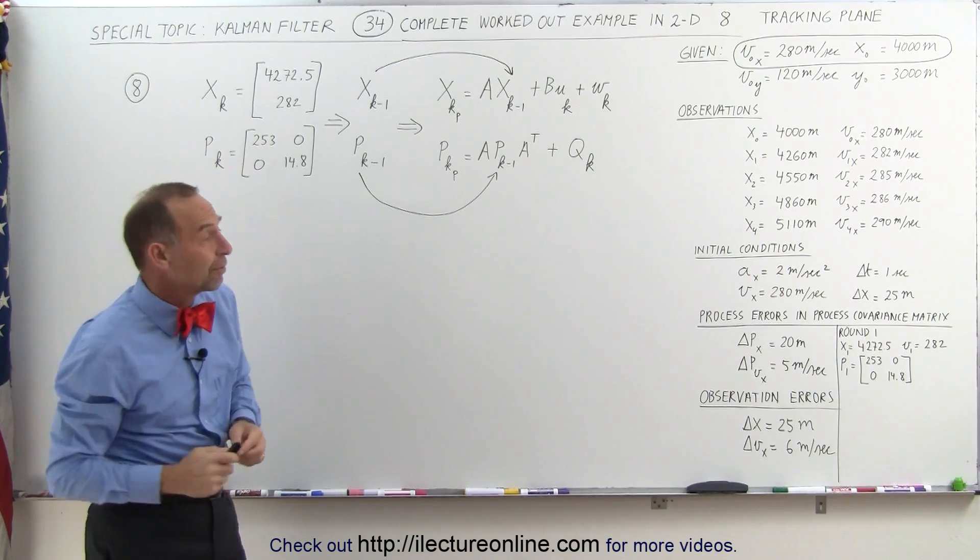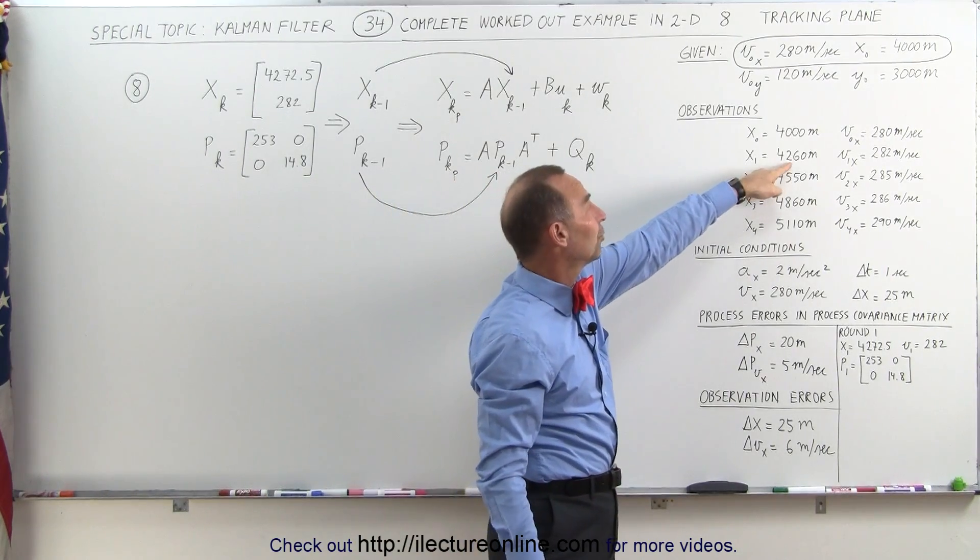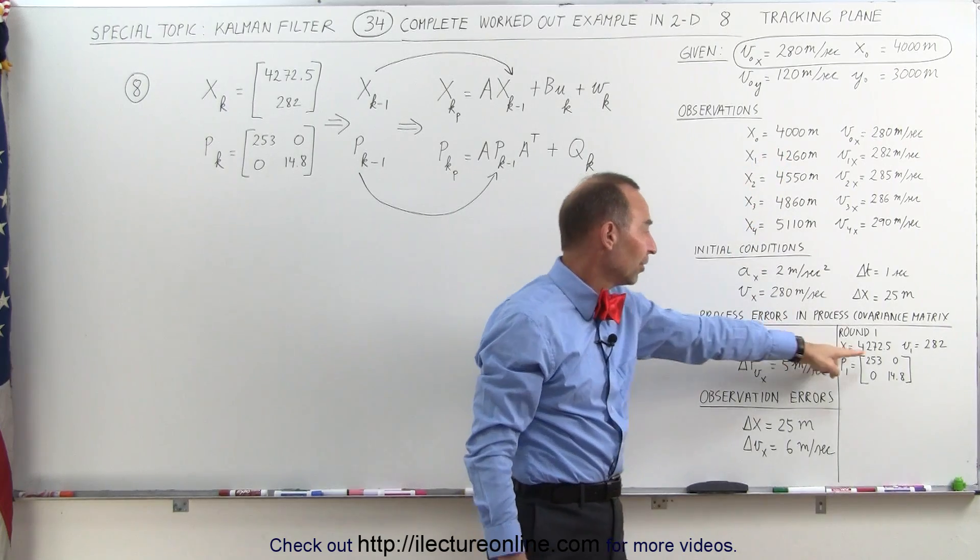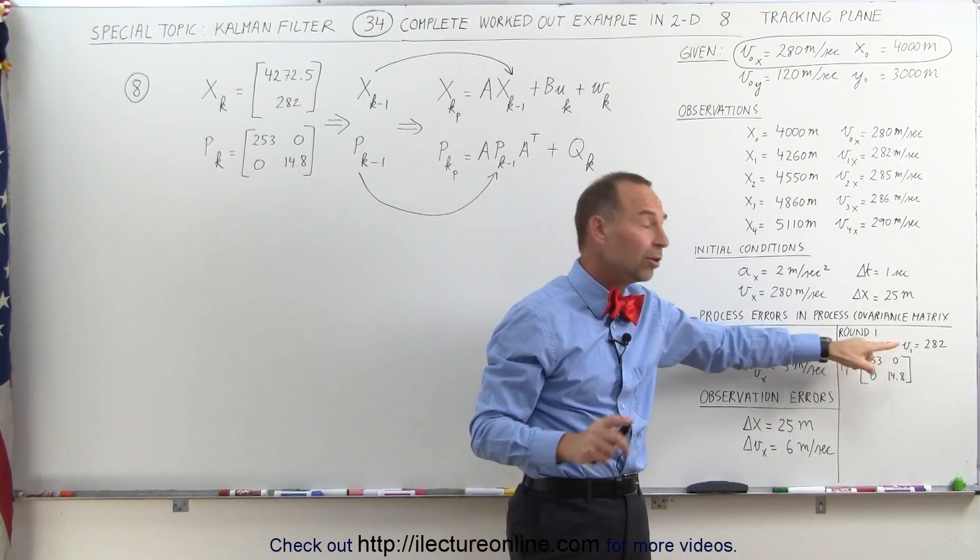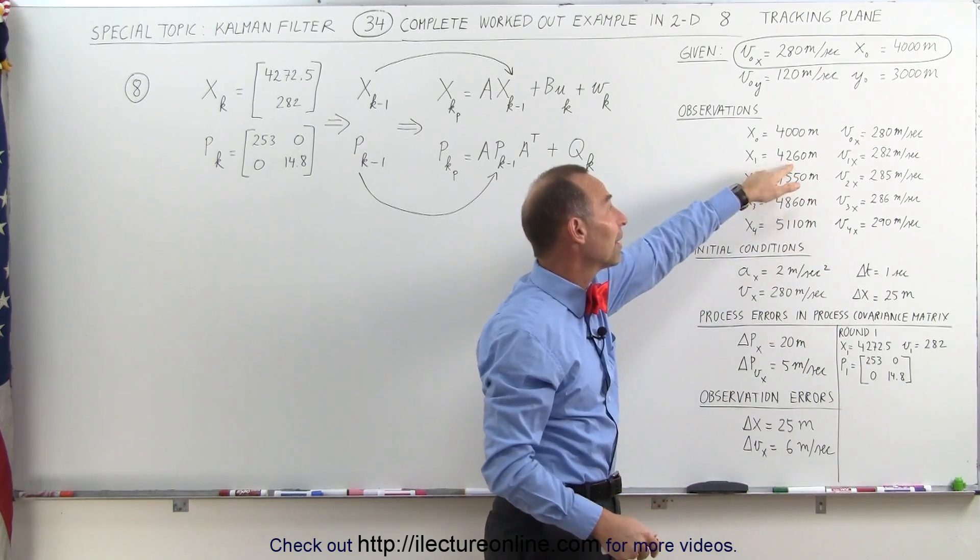Notice the values that we've obtained. The observed position was 4260. The Kalman filter gives us a value of 4272.5, so a little bit greater than the measured value.